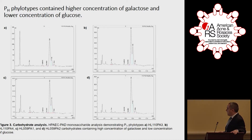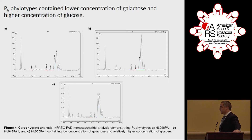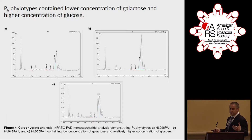The PH phylotypes came up with higher concentration of galactose and lower concentration of glucose. The PA phylotypes had lower concentration of galactose and higher concentration of glucose. The point of doing this was to better characterize our samples and see if they have a different molecular composition, and through that perhaps explain the differential cytokine secretion profile that we observed.